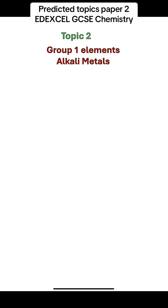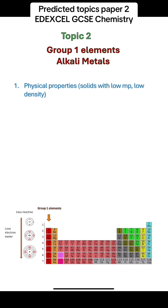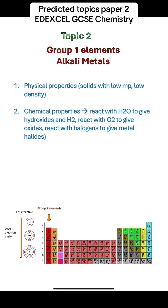Topic 2 is group 1 elements, the alkali metals. Their physical properties include being solids with low melting points and low density. Their chemical properties include reacting with water to give hydroxides and hydrogen, reacting with oxygen to give oxides, and reacting with halogens to give metal halides. Remember that all of these reactions are redox reactions, and you should be able to write the ionic equation.